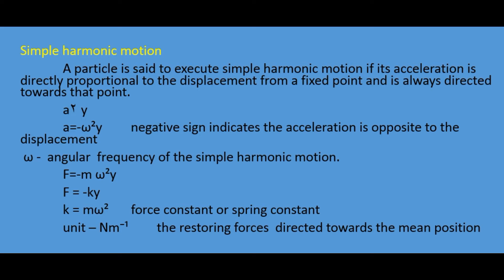A particle is said to execute Simple Harmonic Motion if its acceleration is directly proportional to the displacement. That is, acceleration a is directly proportional to displacement y. To remove the proportionality we add a constant omega squared, so a equals minus omega squared y. The negative sign indicates the acceleration is opposite to the displacement. The omega here is the angular frequency of the Simple Harmonic Motion.